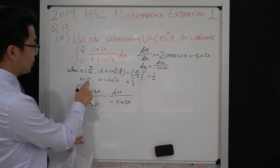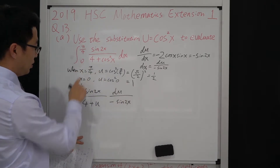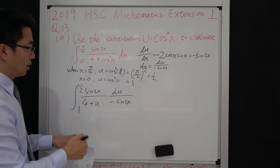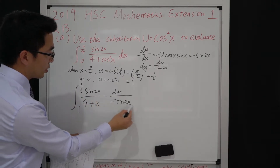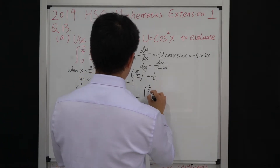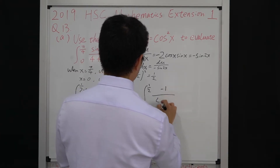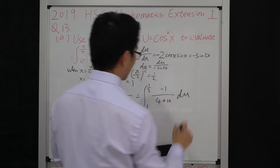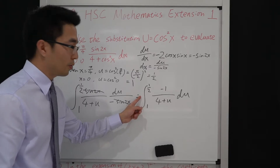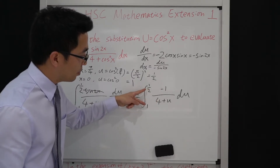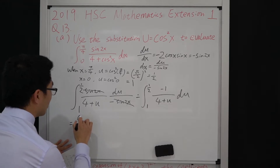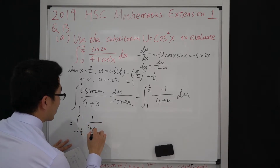When x equals 0, u is 1, so the lower limit is 1. When x equals π/4, u is 1/2, so the upper limit is 1/2. The sin 2x terms cancel, leaving a negative sign. We can bring the negative sign to the front of the integration, or use it to flip the interval, giving the integration from 1/2 to 1 of 1/(4 + u) du.